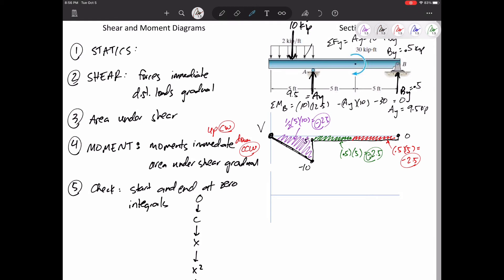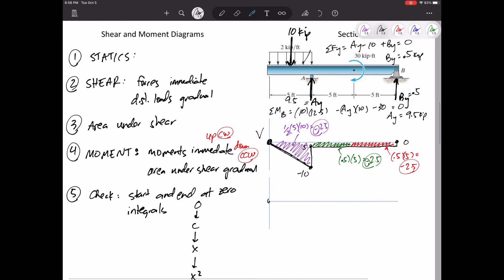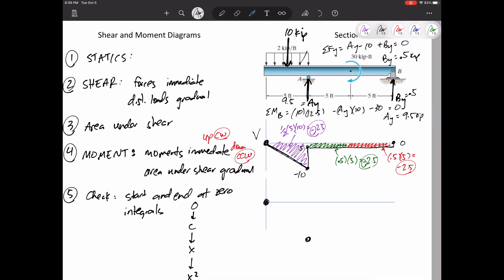So let's draw our moment diagram. Let's start at zero. There's no immediate moments that push me up immediately. But there is an area under the curve that is going to push me down by 25. How does it get down by 25? V is the slope of M. I start with the slope of zero. I end with the slope of negative 10.